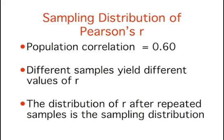Assume that the correlation between quantitative and verbal SAT scores in a given population is 0.60. In other words, rho equals 0.60. If 12 students were sampled randomly, the sample correlation, r, would not be exactly equal to 0.60.